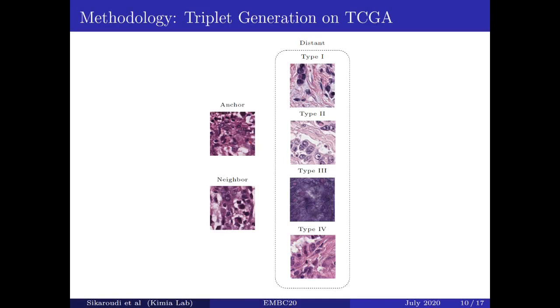Here you can see an example of how we can generate our triplets. A stomach adenocarcinoma slide has been selected as an anchor, and a neighbor tile. We have four choices for distant tiles. Type number one is to extract the distant tile from the same whole slide image by taking far distance from the anchor and neighbor tiles. Type number two is to use a different whole slide imaging image, but from the same cancer subtype. For example, here a stomach adenocarcinoma whole slide imaging image has been chosen. Type number three is to use different subtypes. For instance, here we have used colonic adenocarcinoma. And the last one is to utilize different cancer type from a different anatomical organ. For example, here we have used lung adenocarcinoma.